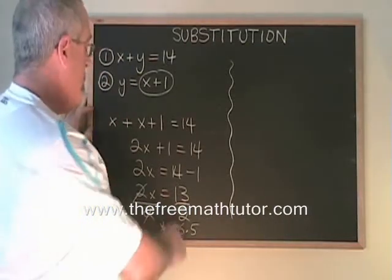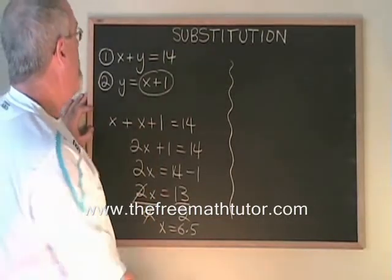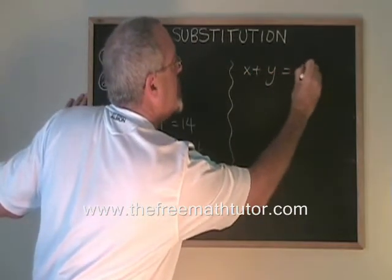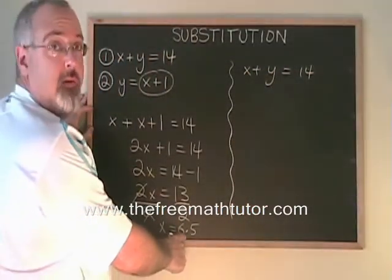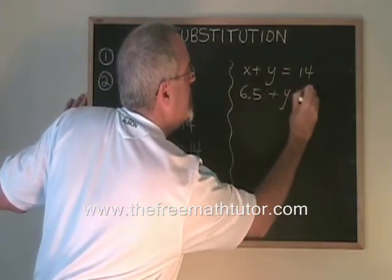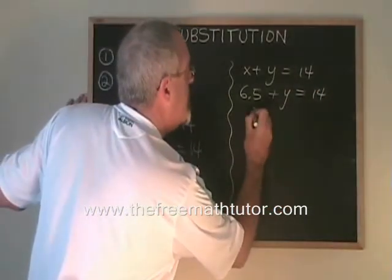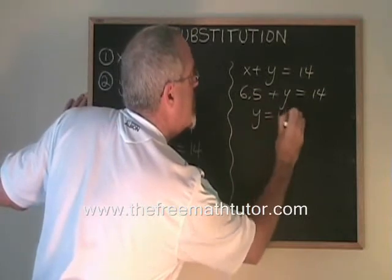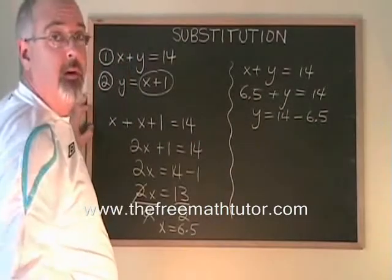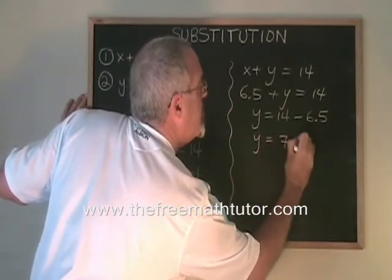How do we find the y? We take the x that we found, and we plug it into either of the first equations. I'm going to use equation one again: x plus y equals 14, and I'm going to substitute 6.5 into the x position. 6.5 plus y equals 14. Isolating the y means moving the 6.5 to the other side where it becomes negative, and 14 minus 6.5 is equal to 7.5.